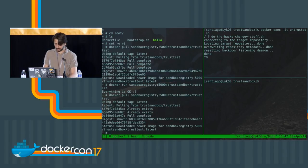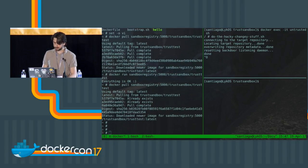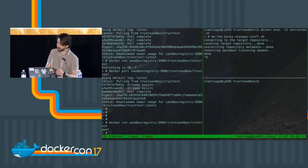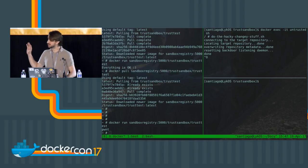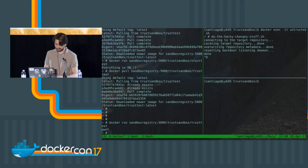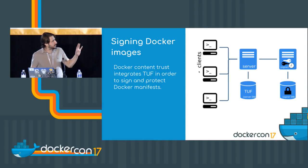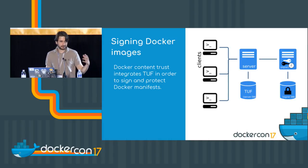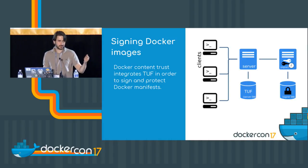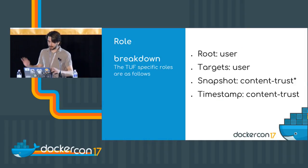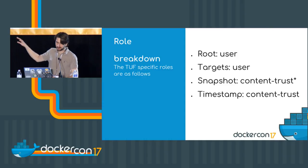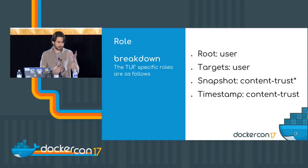Now if we pull an update and run it, apparently we're owned. This is because there was no way to know which image we were supposed to be fetching. But today, this is not what happens. Today, Docker allows you to sign Docker manifests using TUF so you can be sure that the image you're downloading is the latest, trusted image signed by the authorized party.